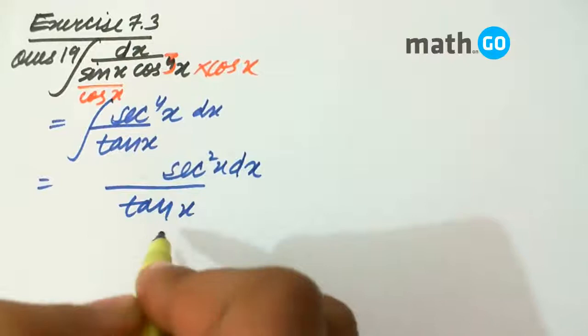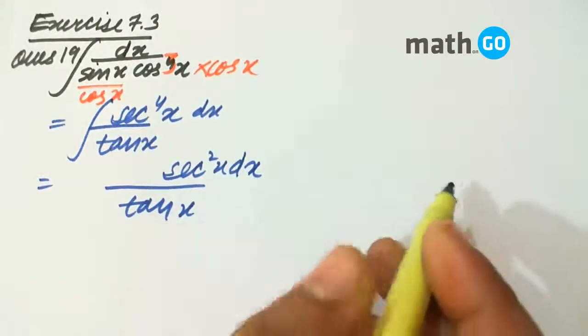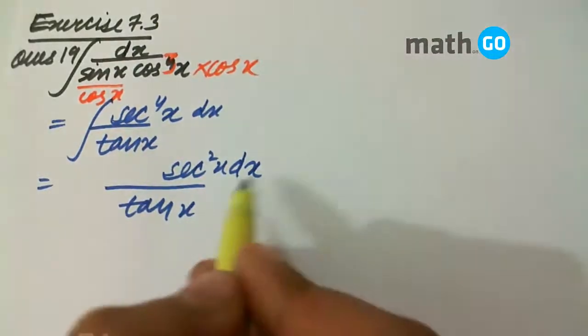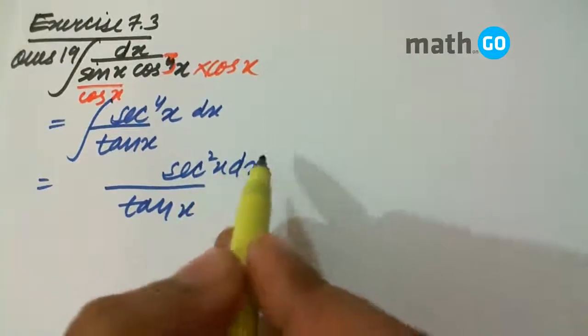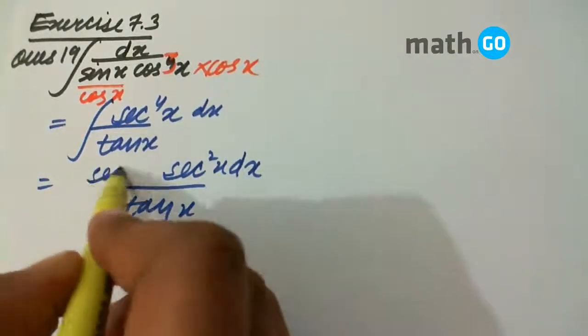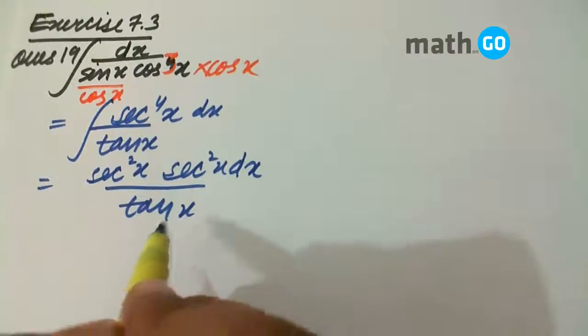We will rearrange it because we have to put tan x equals to t. That makes the question easy. So this can be removed with the dx. We are still left with sec square x.